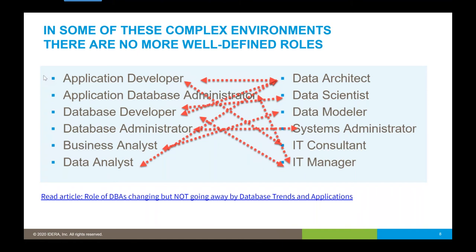I attached an article from Database Trends and Applications — there's a link inside the presentation — about how the role of database administrators is changing but not going away. Recently, I contacted one of my database administrators and when he responded, his title had changed to data analyst. He said he didn't change roles, but because he's now touching the data more — still creating objects and managing table spaces, but also creating reports — his title is now data analyst. Each one of these stakeholders is now part of a team, a DevOps team, and their levels of expertise may vary.